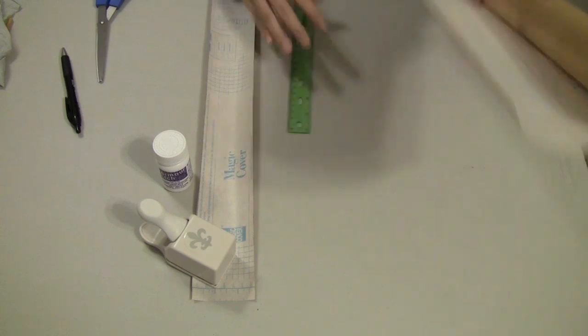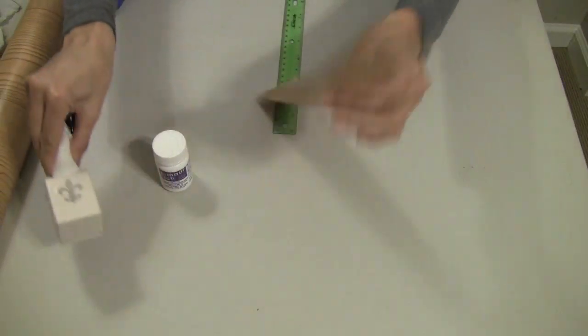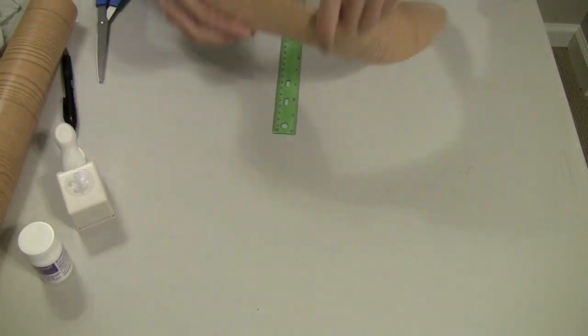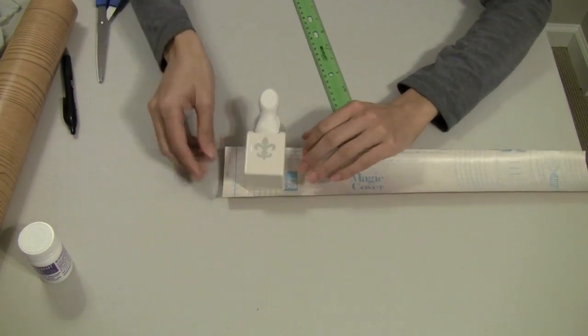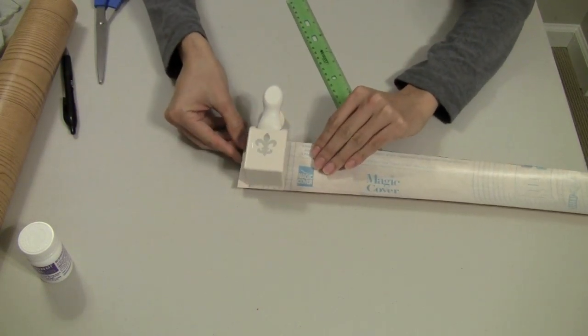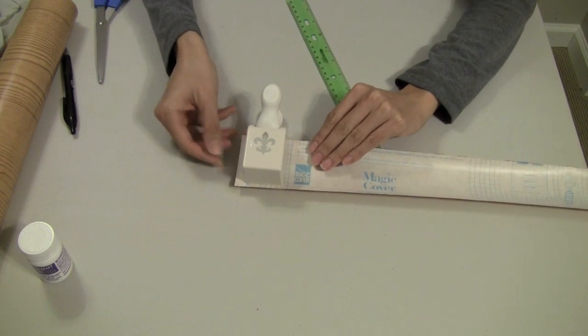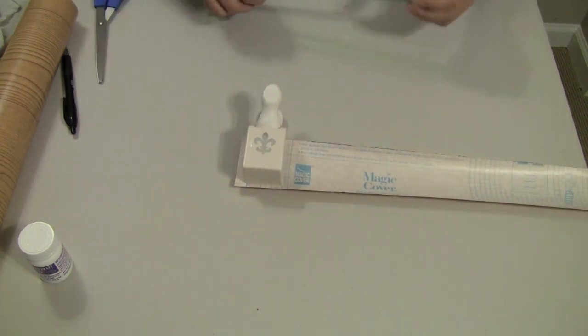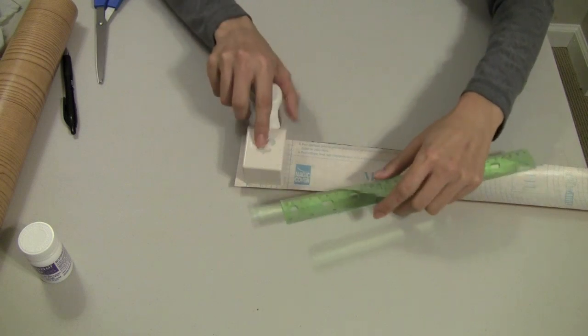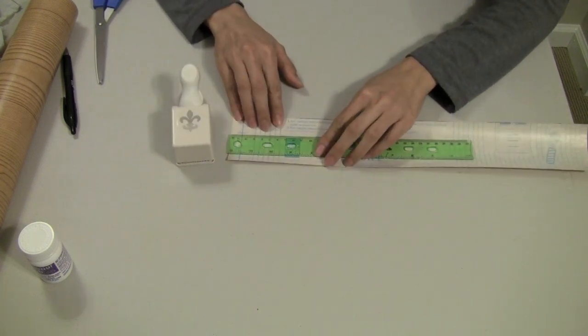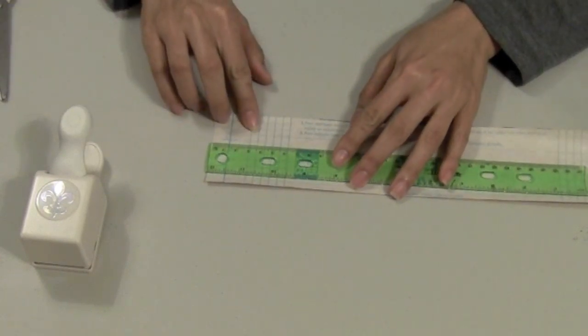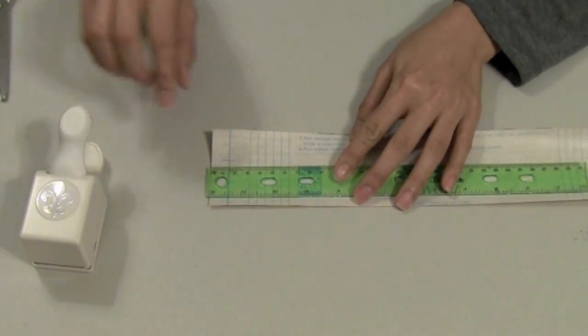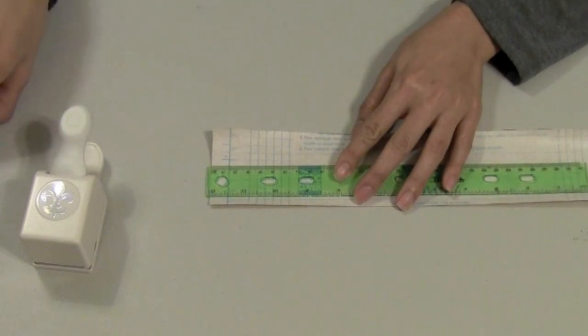Alright, so I've cut down my strip. Now I want to make sure I have good margins around all of my stamps. So I think I'll cut about two inches from the edge and that will be the standard for my stamp.